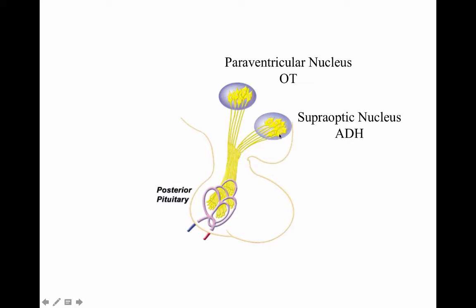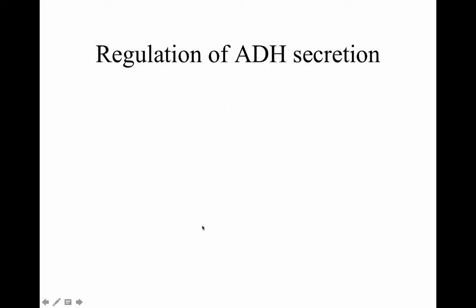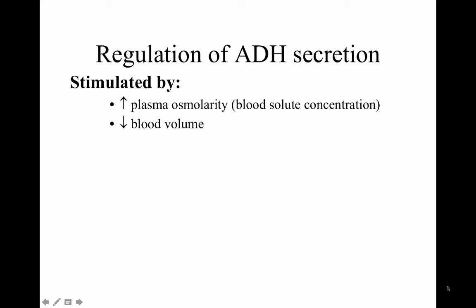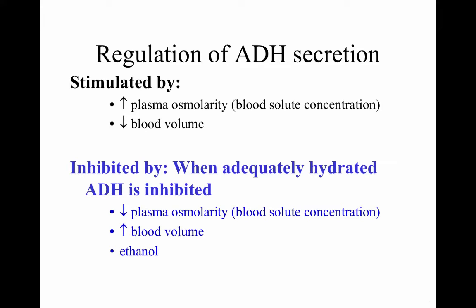Antidiuretic hormone is made within the supraoptic nucleus of the hypothalamus and released to the posterior pituitary to be released into the bloodstream. ADH secretion is stimulated by increased plasma osmolarity or blood solute concentration, or decreased blood volume. ADH secretion is inhibited when we are adequately hydrated — decreased plasma osmolarity or increased blood volume. Ethanol also increases inhibition of ADH, which is why when we drink alcohol we need to urinate more — ethanol is inhibiting antidiuretic hormone.